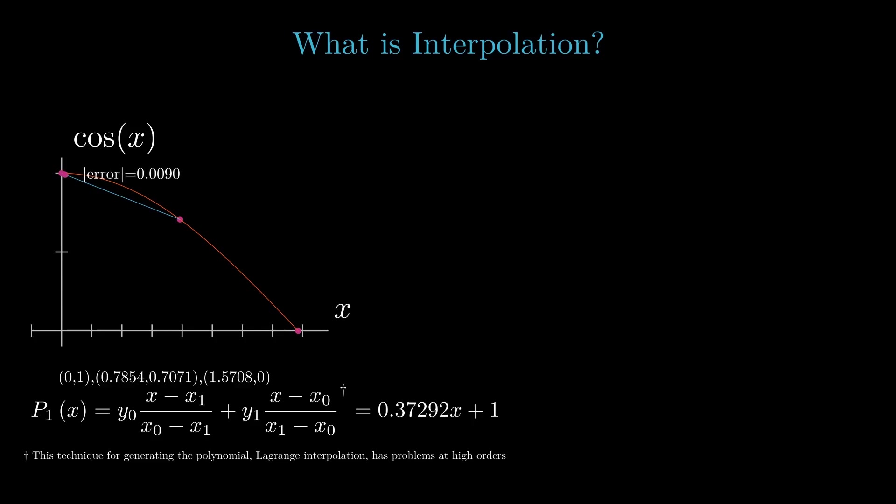We start by approximating the values for cosine between the first two nodes using simple linear interpolation. That is, passing a straight line between the points. We get a maximum error of 0.07.